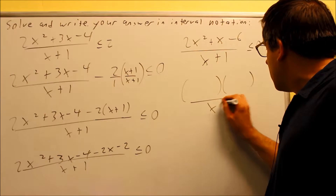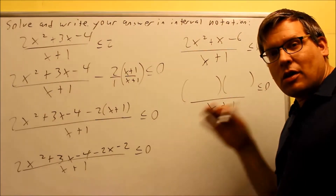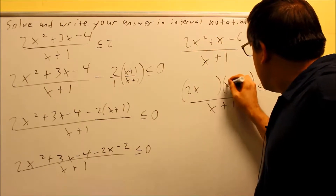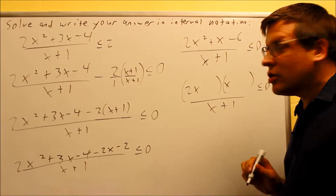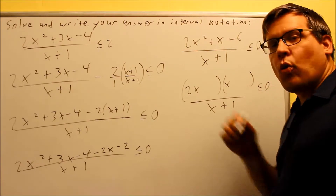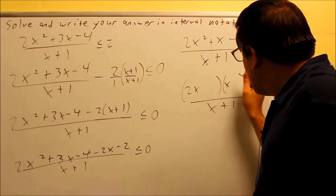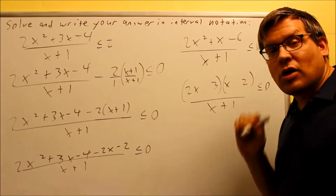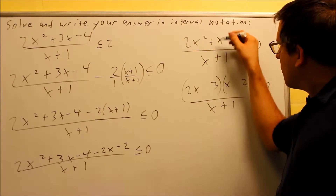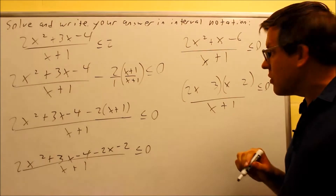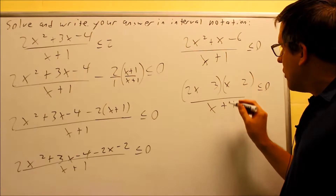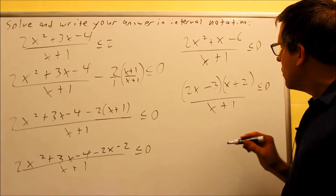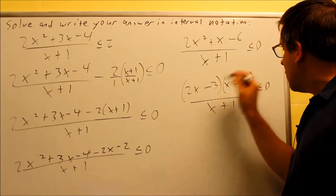I'm going to factor this one by using trial and error. You can use any method you feel comfortable with, but I'll use trial and error here because there's not a whole lot of factors of 2 and 6 to deal with. To get 2x squared, the only way is 2x and x. For minus 6, you can use 1 and 6 or 2 and 3 — I'll use 2 and 3. Usually you won't have the same number in both, so I'll put 3 here and 2 here to try it out. I know one of these will be plus and one minus. Multiplying through: that's 4 and this is 3, so I want a positive 1 result — I'll put a plus sign here and a negative sign there. Positive 4 minus 3 gives plus 1x, and negative 3 times 2 gives negative 6. Now we have it in factored form.